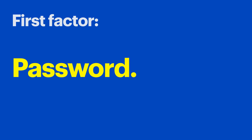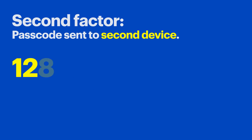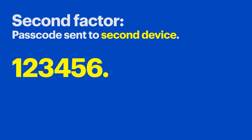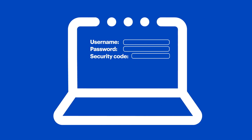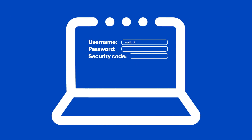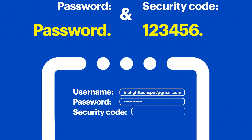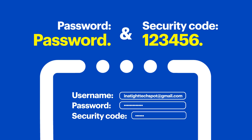The first factor is often the password. The second is often a security code that's sent to a separate device or account. So if an unauthorized person was attempting to access your device or account, they would need both. This adds an additional layer of security and it's pretty easy to set up.